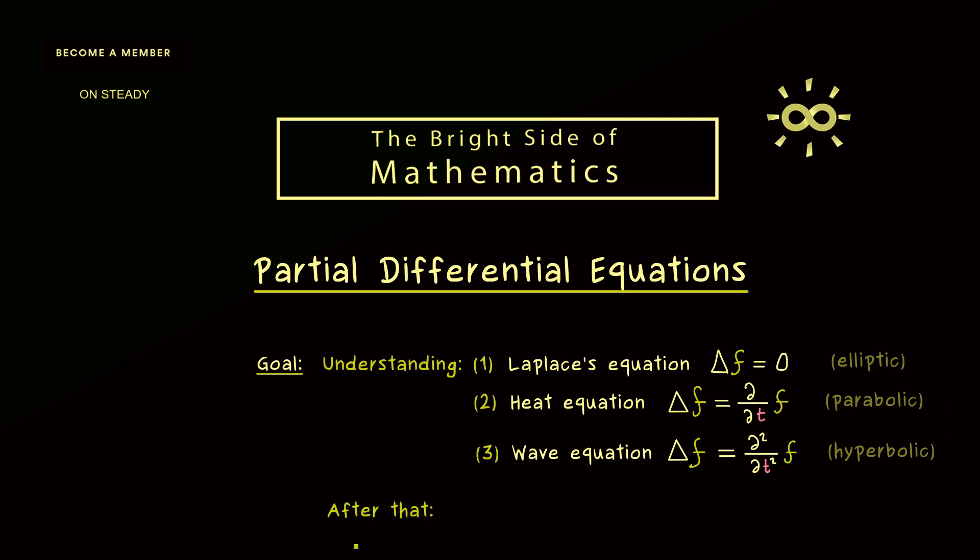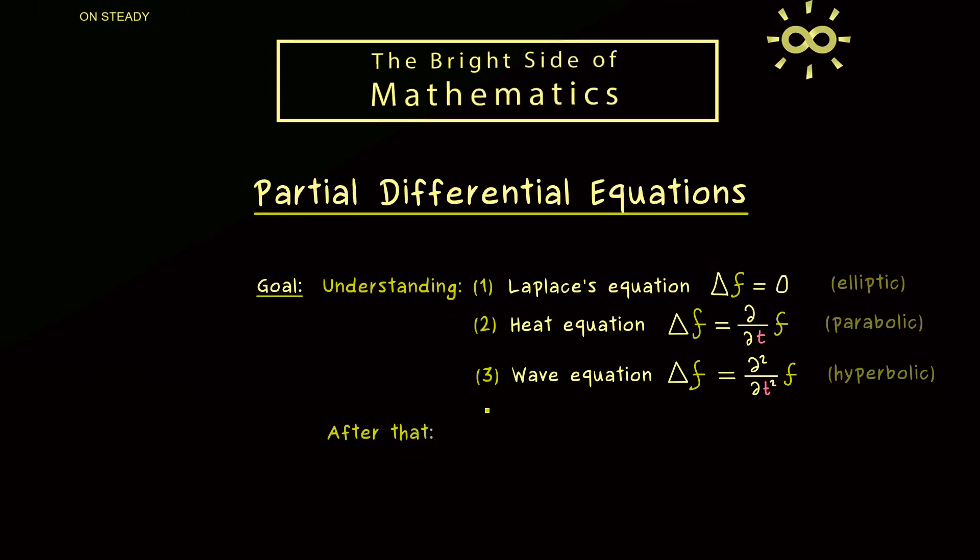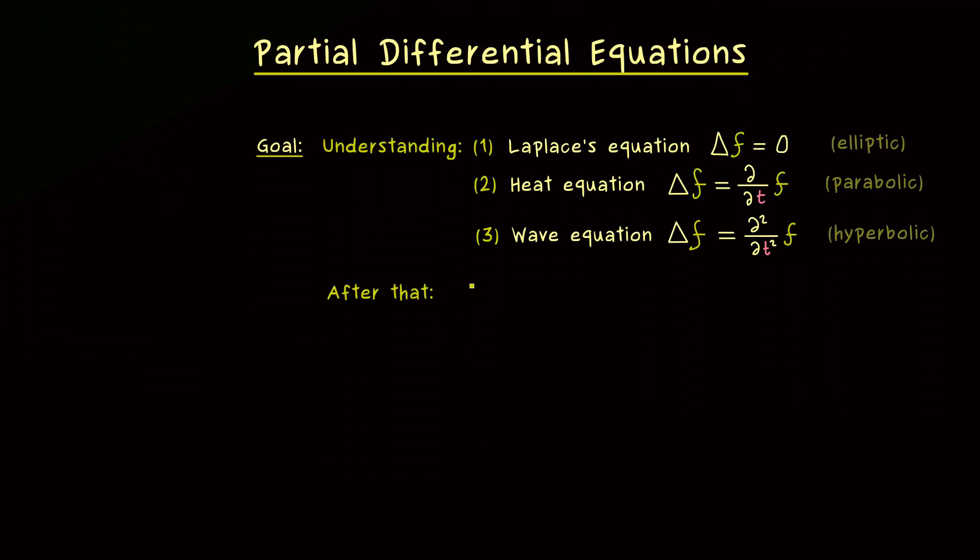And indeed this is something we will do afterwards, after our discussion of these three types. This will be a more general abstract theory, where we talk about Sobolev spaces, distributions and so on. But this is definitely something I will do later, and maybe I put some stuff into separate series, like I have already done it for the distributions.